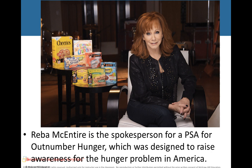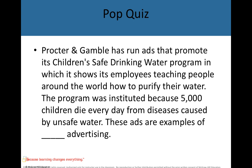Here's a quiz: Procter & Gamble has run ads promoting its Children's Safe Drinking Water Program, showing employees teaching people around the world how to purify their water. This program was instituted because 5,000 children die every day from diseases caused by unsafe water. What kind of advertising is this? Is P&G advertising a product? No. This is institutional advertising — they're showing that P&G is doing something good in the community, not necessarily marketing a certain product.